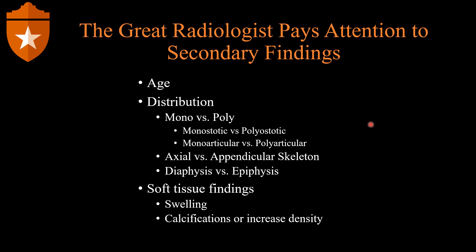Great radiologists pay attention to secondary findings. Important things in MSK radiology include: age — whether the patient is pediatric or adult, determinable by the growth plate status; distribution — monostotic versus polyostotic, meaning one lesion or multiple; monoarticular versus polyarticular; axial versus appendicular skeleton, as the differential diagnosis varies between these locations; and where within the bone — diaphysis, metaphysis, or epiphysis. Also, never forget the soft tissues. Soft tissue swelling, gas, or calcifications can help narrow the differential diagnosis.